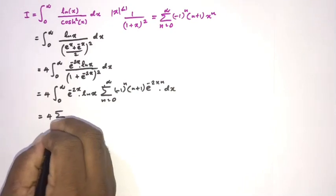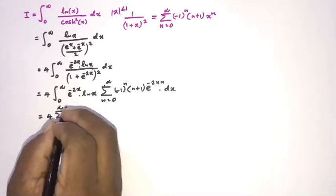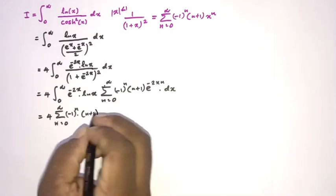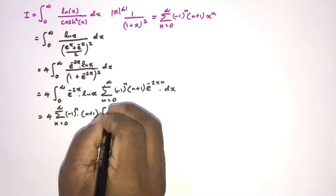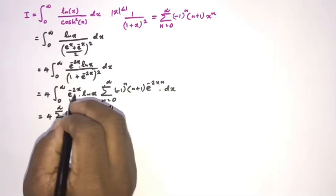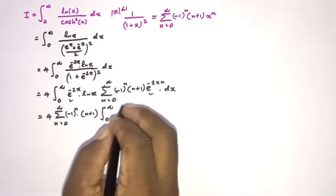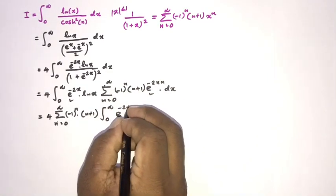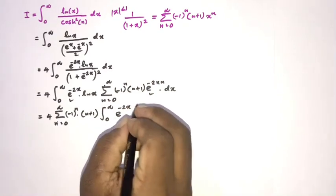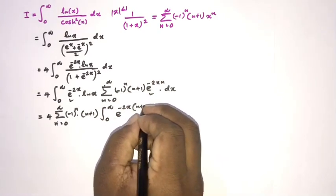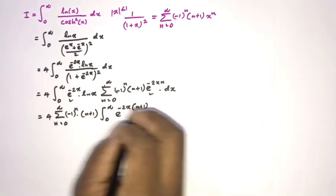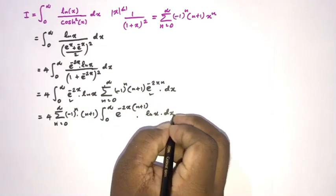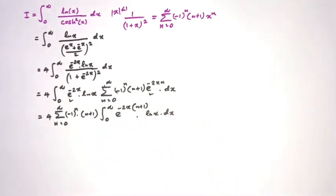The expression becomes 4 · Σ(n=0 to ∞) (−1)ⁿ(n+1) · ∫₀^∞ e^(−2(n+1)x) · ln(x) dx. We call this inner integral J.